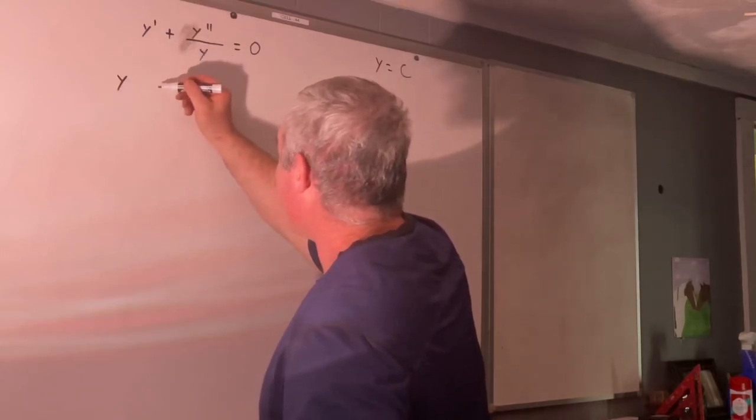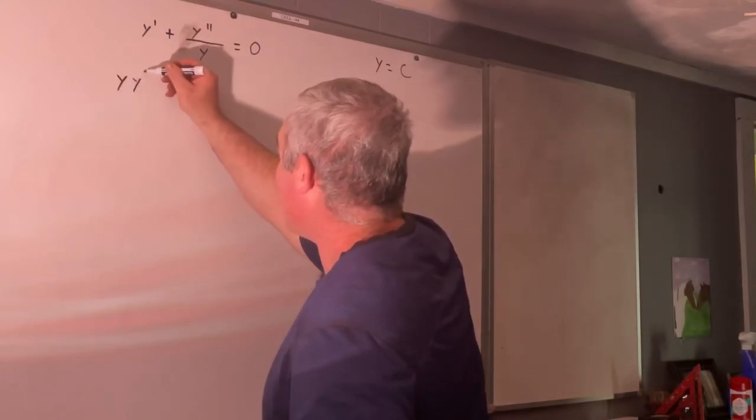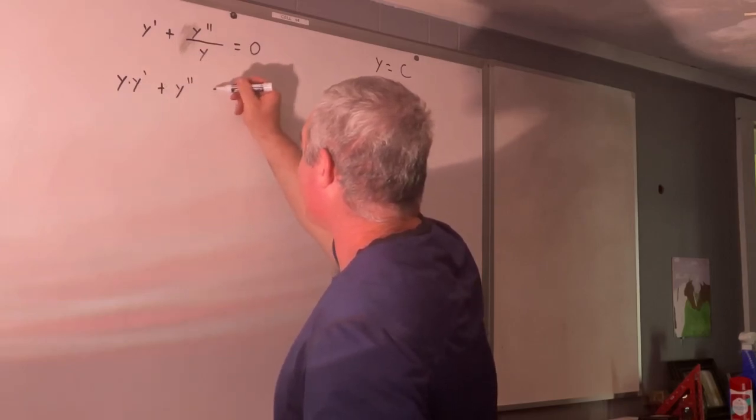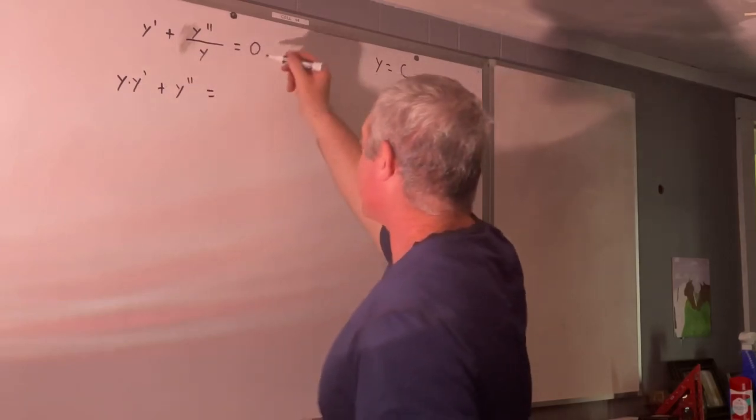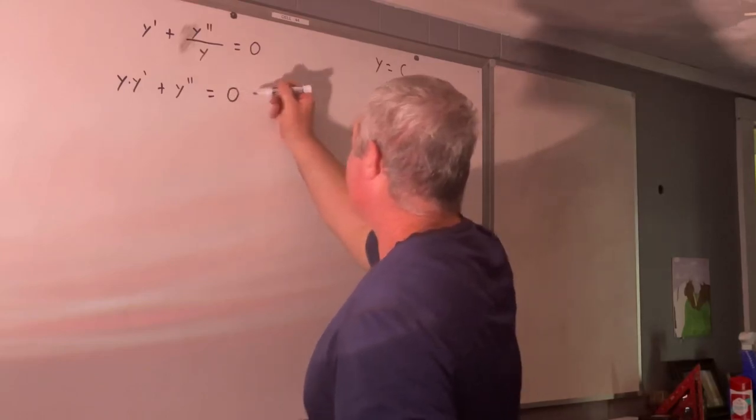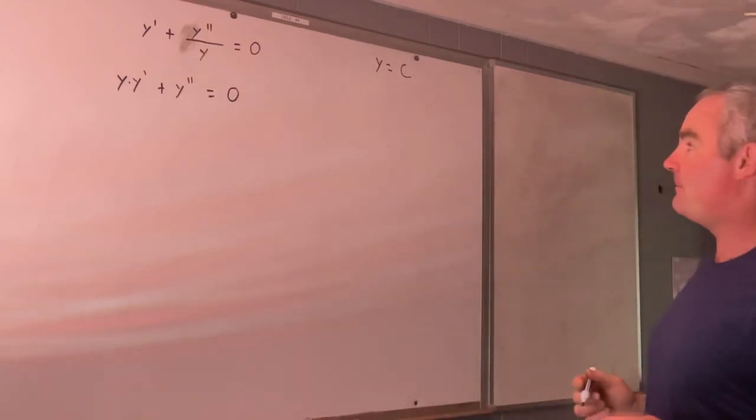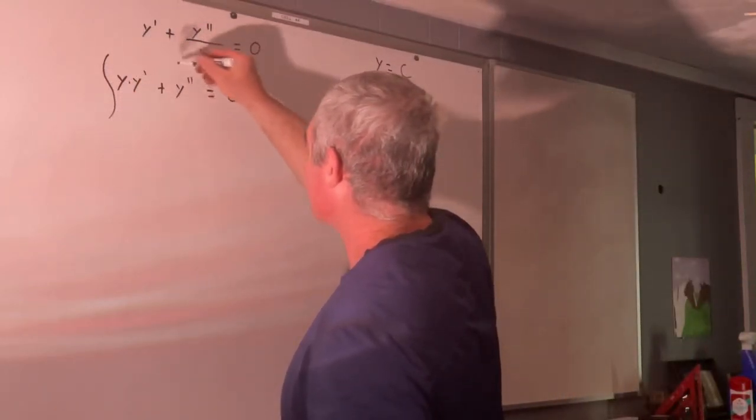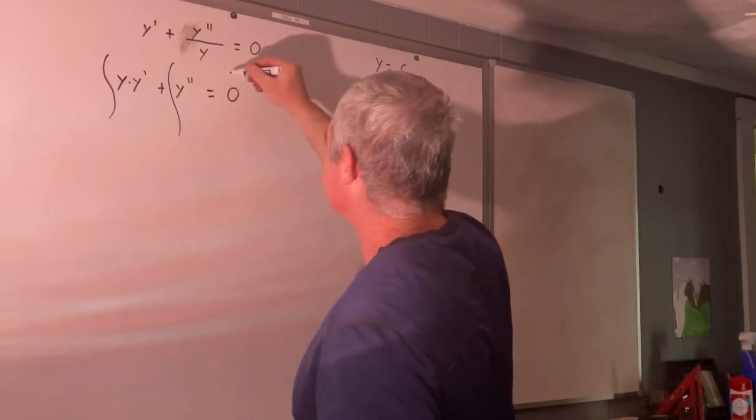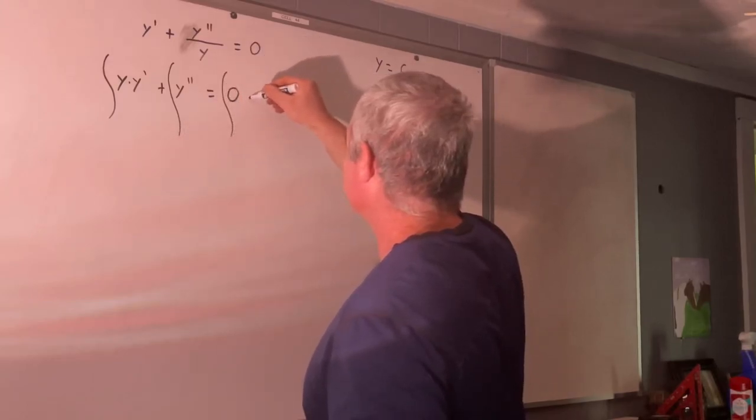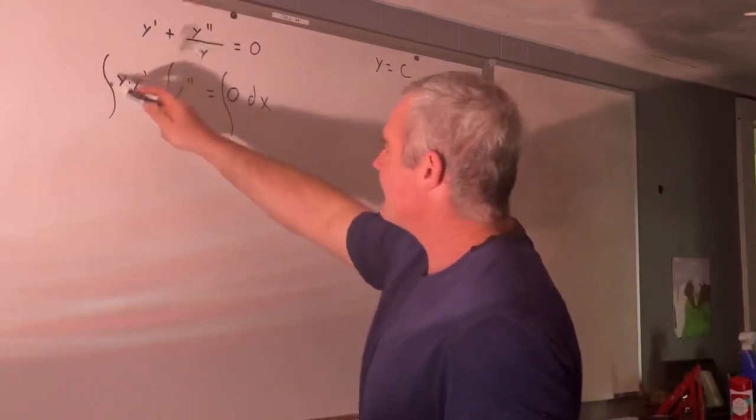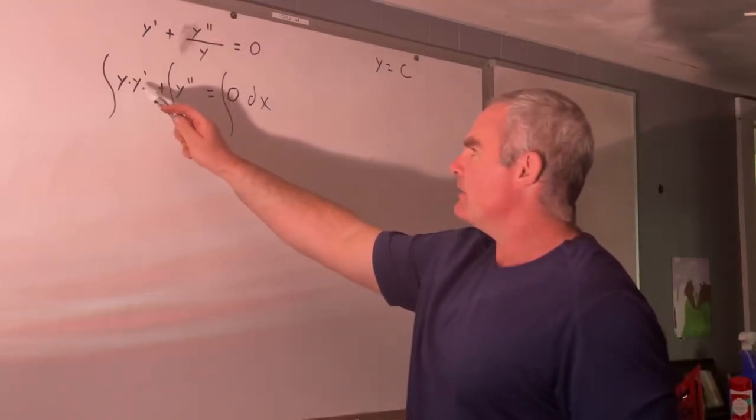So we have y times y prime plus y double prime is equal to 0 times y, which is still 0. Next step. We're just going to go ahead and integrate both sides.